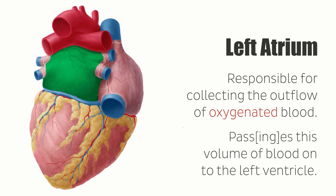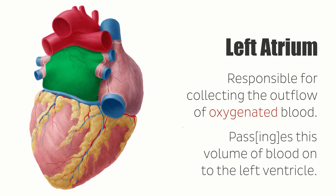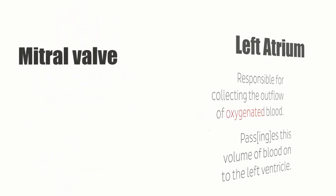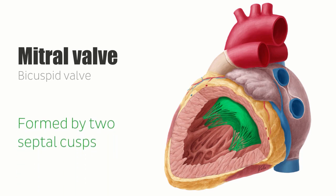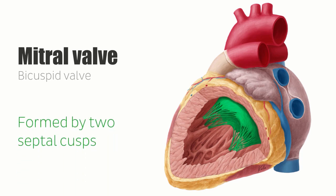It passes this volume of blood onto the left ventricle as the atrium contracts and the mitral valve opens. The mitral valve is also known as the bicuspid valve because it is formed by two septal cusps. Occasionally, it is also mentioned in literature as the left atrioventricular valve.